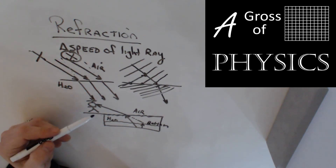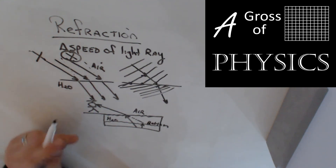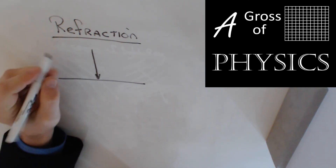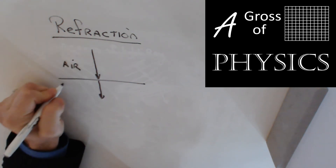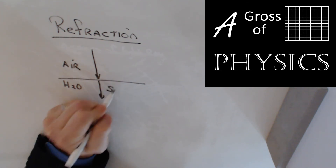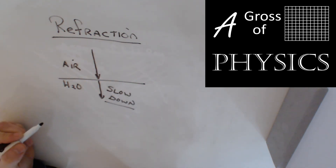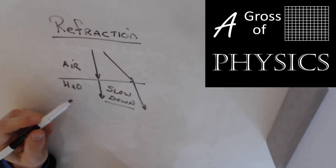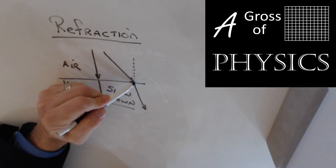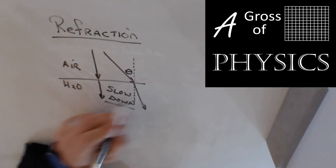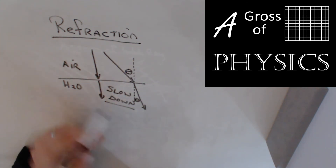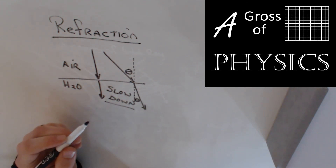If the light ray goes straight down — directly perpendicular to the surface — it will still slow down when entering the new material, but it won't turn. It only turns if it has an angle to begin with. With the normal line drawn, you can see that the original angle, theta 1, is going to be bigger than the second angle, theta 2, the refracted ray. We'll be able to do this quantitatively later.